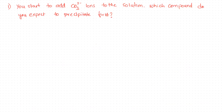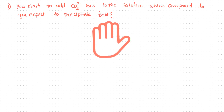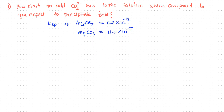Here are the questions. You start to add carbonate ion to the solution. Which compound do you expect to precipitate first — silver carbonate or magnesium carbonate? The answer is the salt with the lower Ksp value, i.e., the least soluble salt, will precipitate first. In this case, it is silver carbonate.